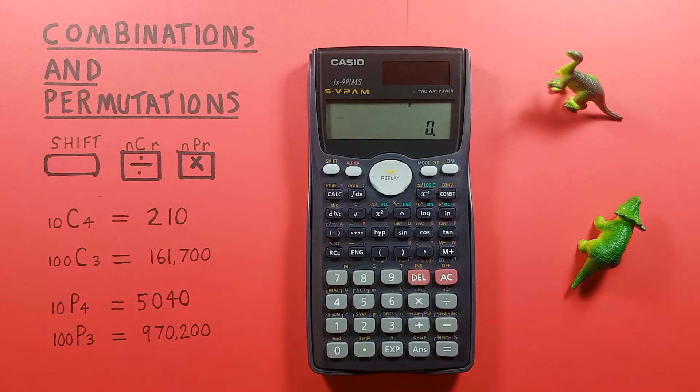Hello and welcome to HP Calcs. I'm Rick and today we're going to have a look at how to do combinations and permutations on the Casio FX-991 MS calculator.